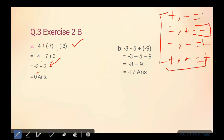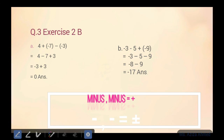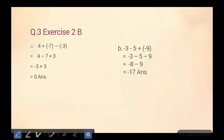Part B: negative 3, negative 5, plus negative 9. Teen terms hain, pehle bracket ko solve karein: plus minus minus. Toh three mein five ko plus karenge, eight aajayega. Dono negative number thay, toh answer bhi minus mein aaya — negative eight. Minus nine as it is neeche aayega. Ab dono numbers aapas mein plus ho rahe hain, nine aur eight ko plus kar liya. Answer kya aaya? Seventeen. Dono number negative thay, toh answer bhi negative mein aayega — negative 17.